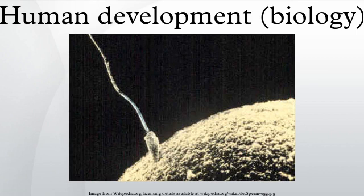Fertilization occurs when the sperm successfully enters the ovum's membrane. The genetic material of the sperm and egg combine to form a single cell called a zygote, and the germinal stage of prenatal development commences. The germinal stage refers to the time from fertilization through the development of the early embryo up until implantation, and is over at about 10 days of gestation.